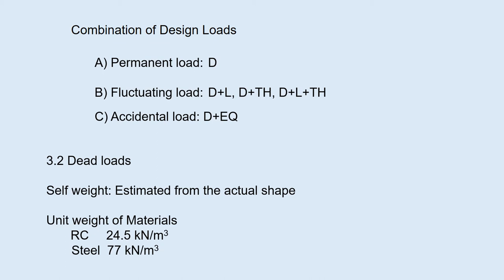Let's look at each design load more in detail. 3.2 dead loads, which is the self-weight of a bridge. It can be obtained by multiplying the estimated volume of bridge members with the unit weight of the materials such as RC of 24.5, steel of 77 kN per cubic meters.